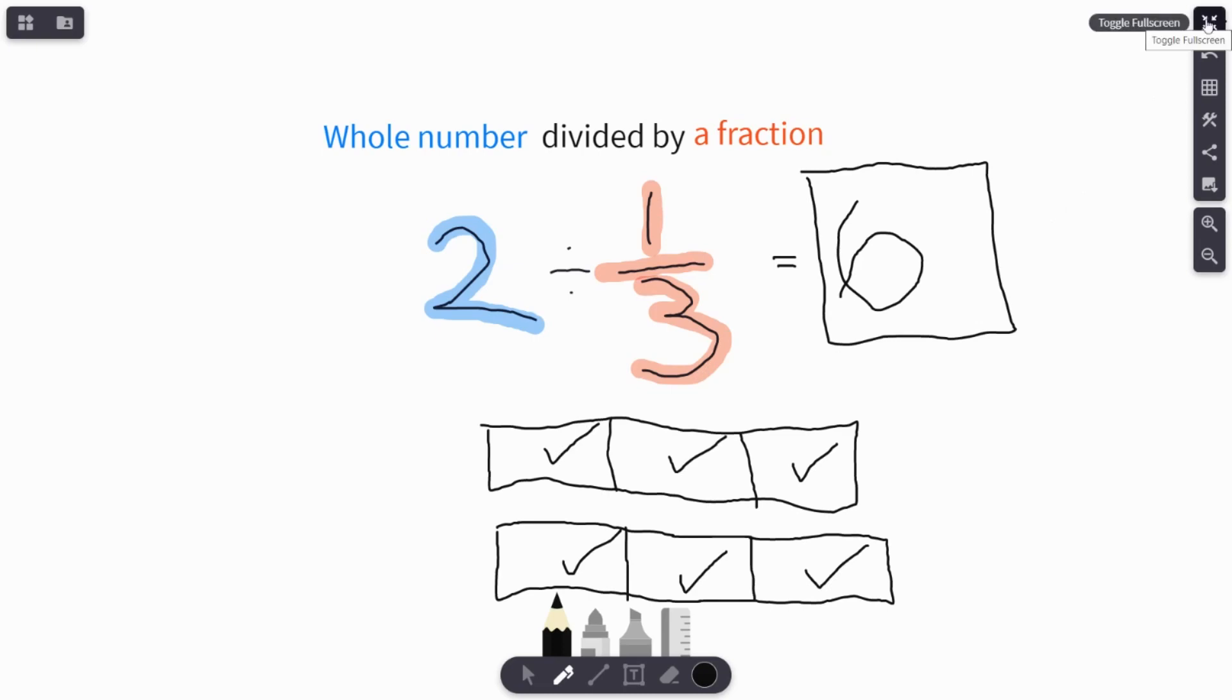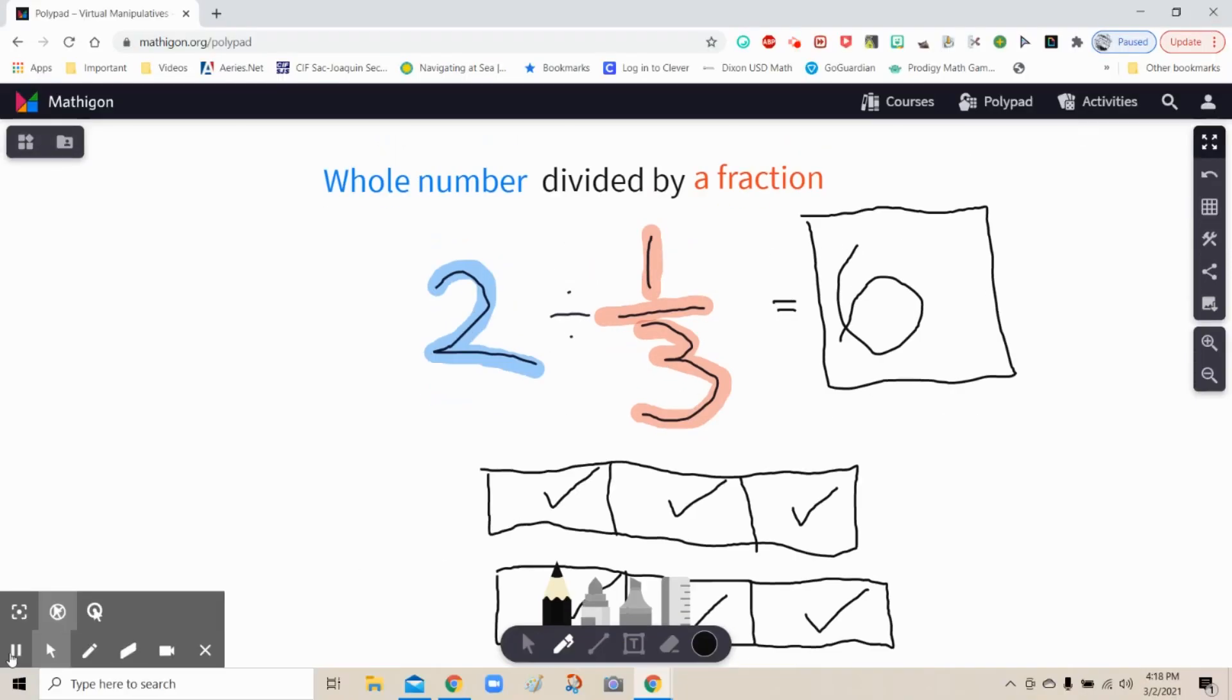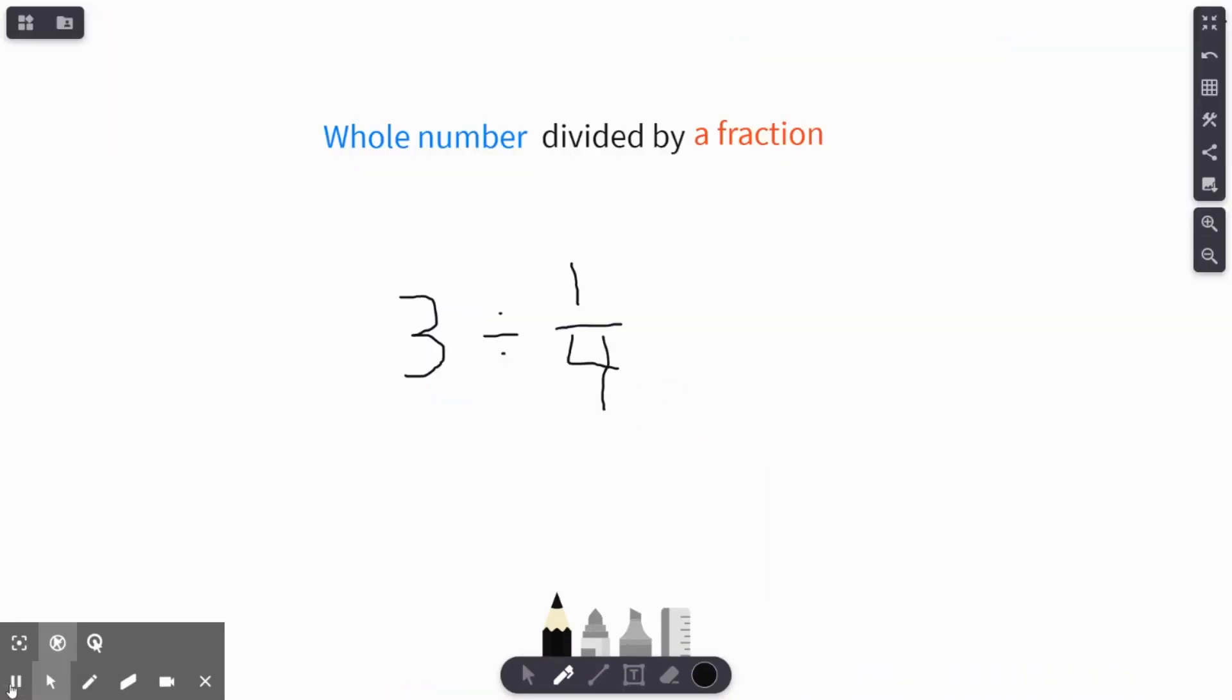I'm going to reset this and we're going to do a couple more. The next problem we're going to do is three divided by one fourth. So again, our whole number is three, our fraction is one fourth. We're dividing a whole number by a fraction.